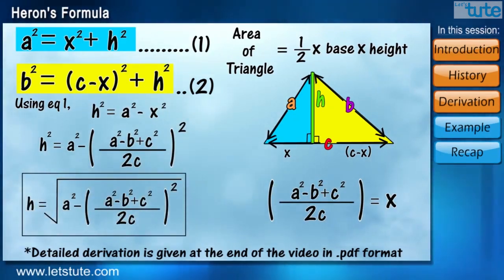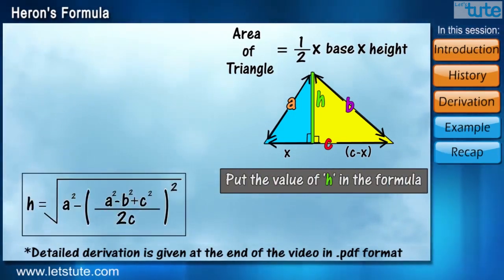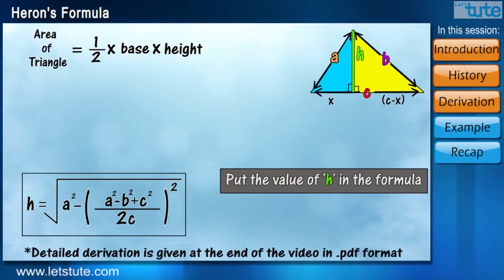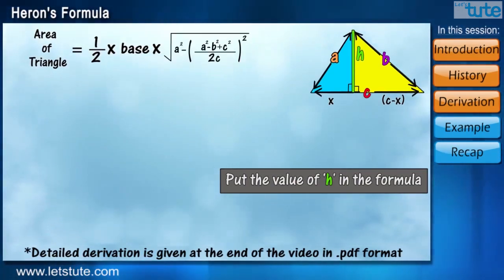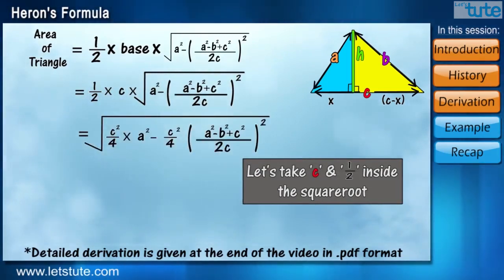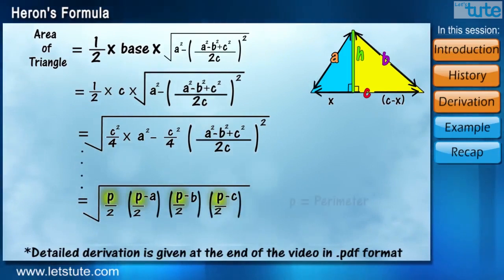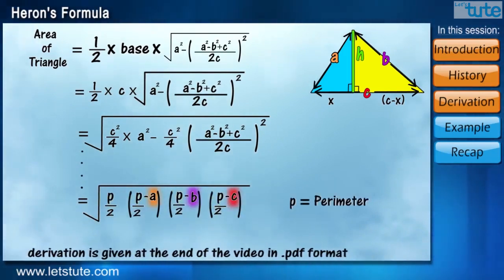Now, all we have to do is put the value of H in the formula half into base into height. Let's take C and half inside the square root. Now, after solving it further, we come to a step where we only have perimeter and sides in the formula.